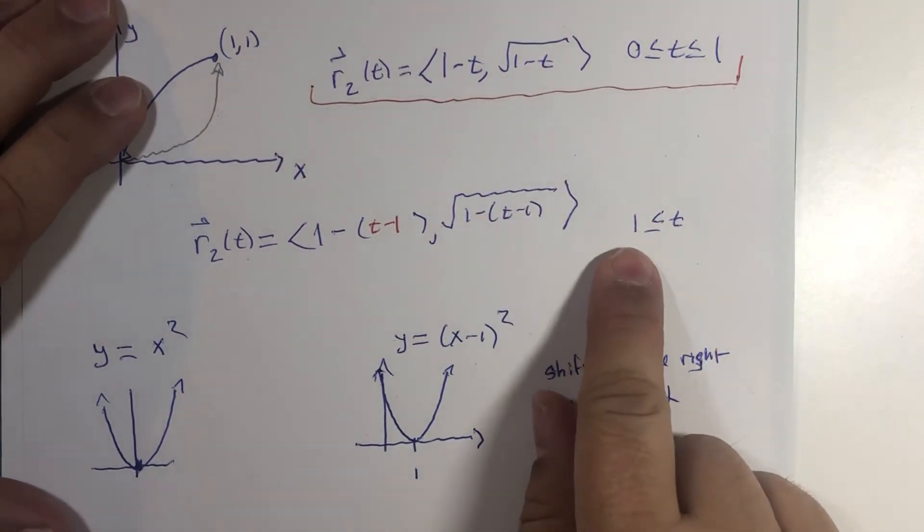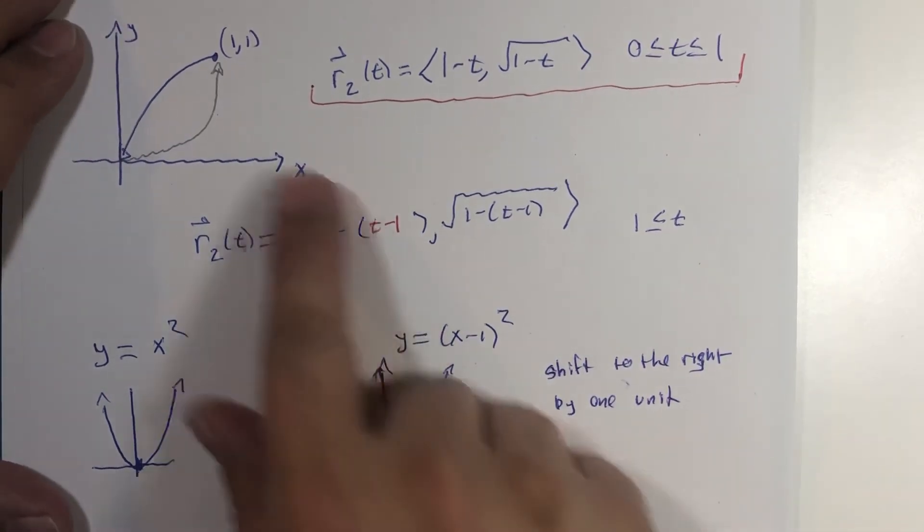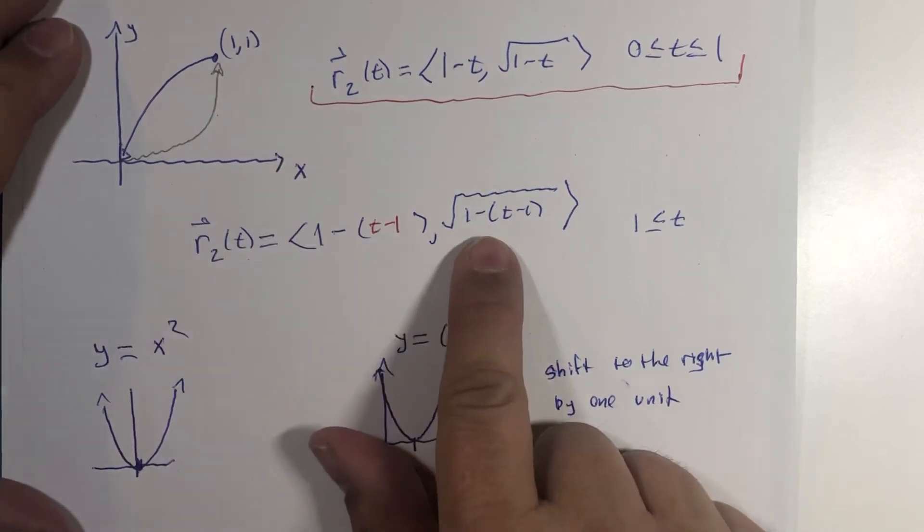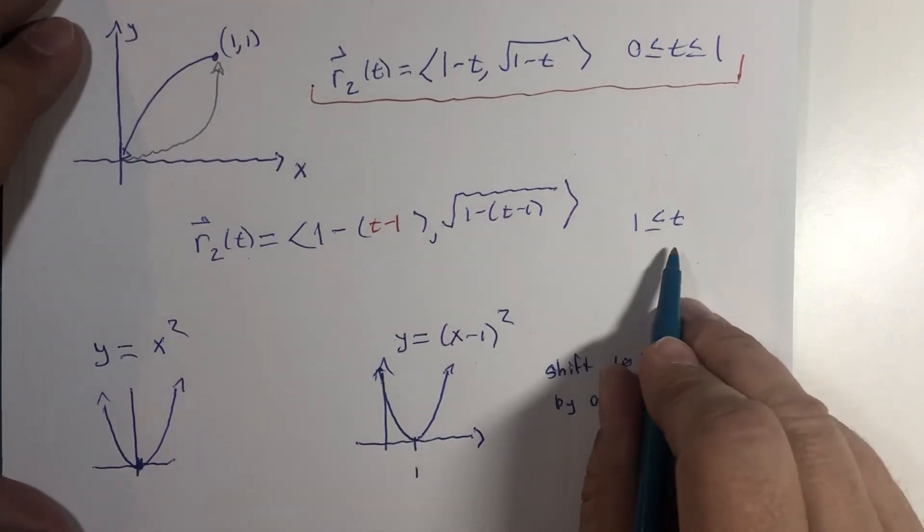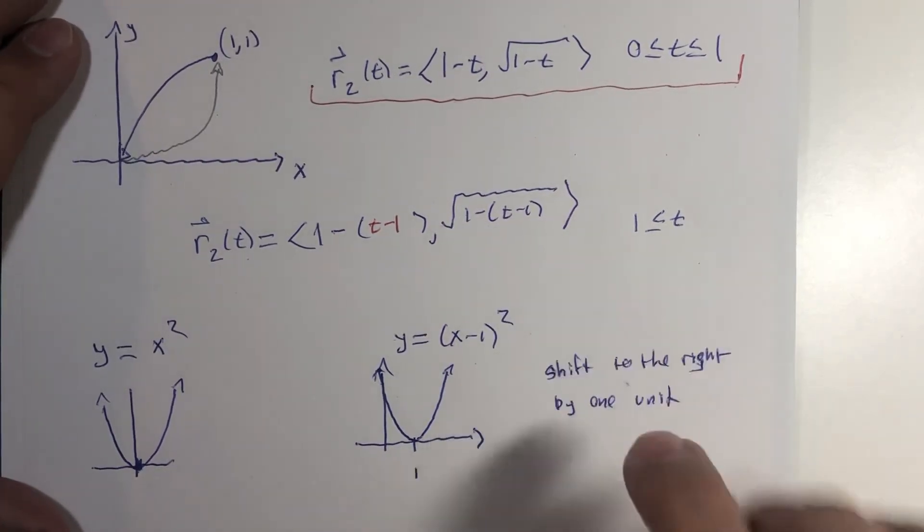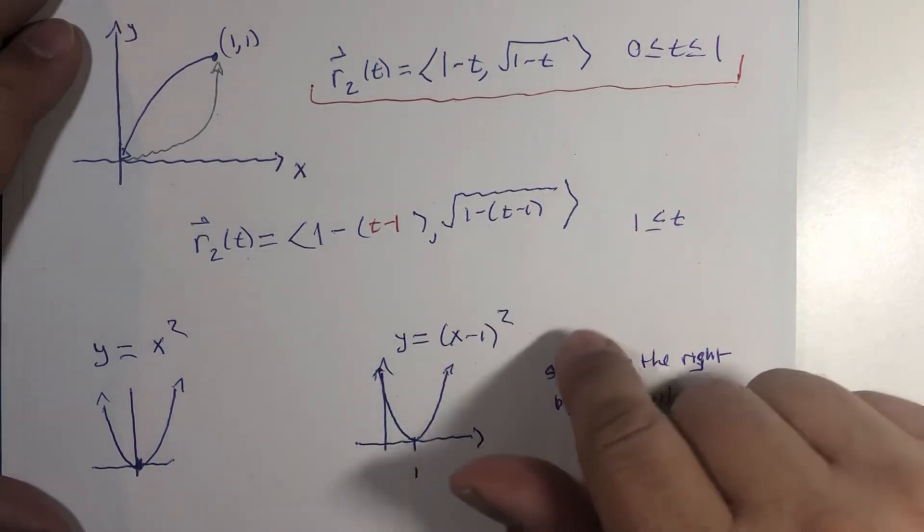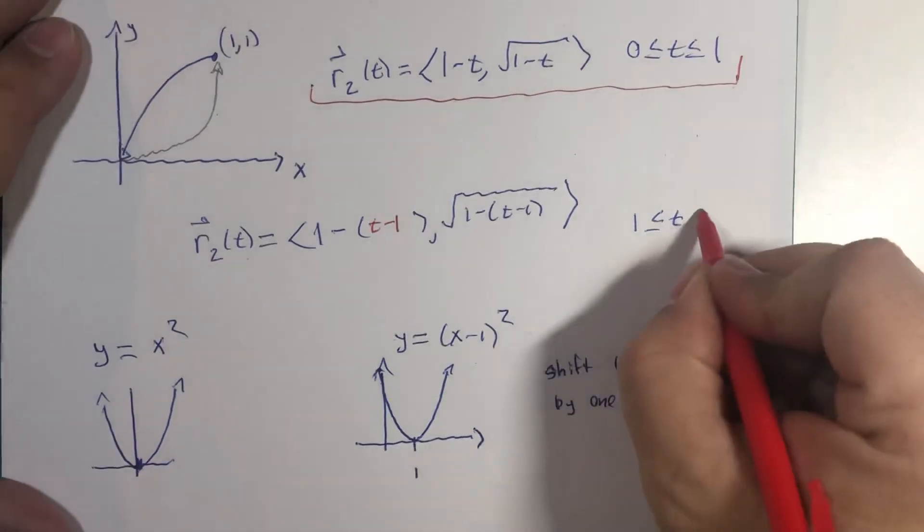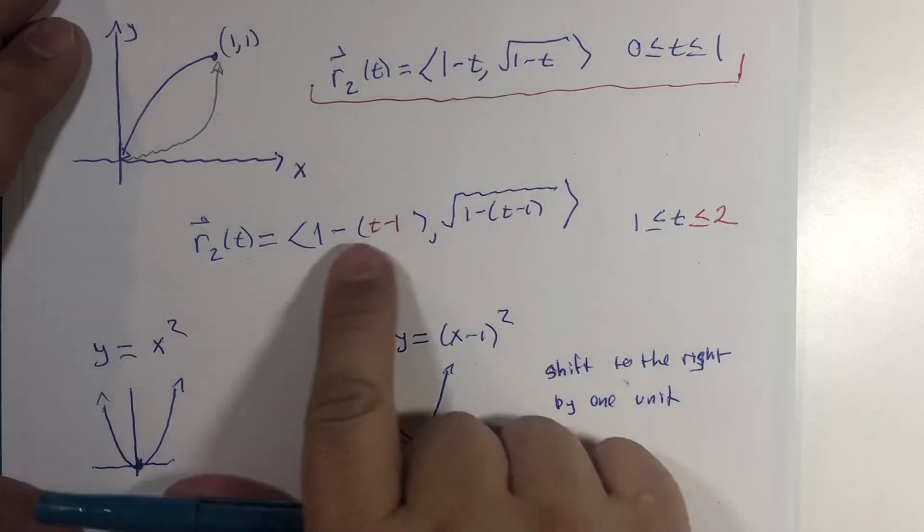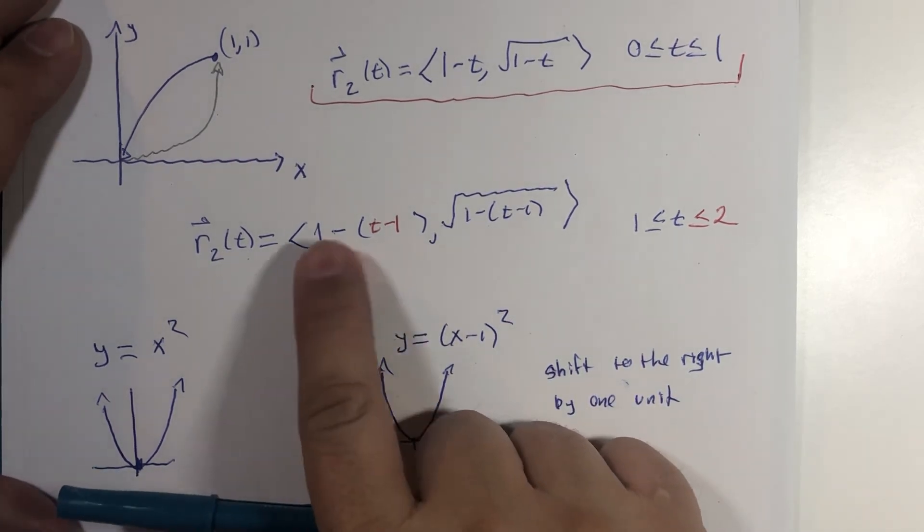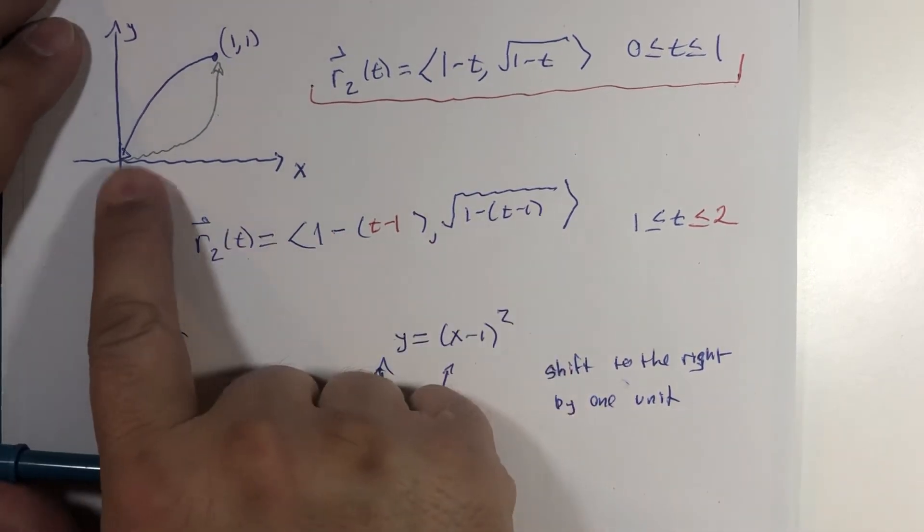If t is one, this is zero, one minus zero is one, I start at the point (1,1), that'd be square root of one. What's the time value where it all ends? Well if it took one second to get there and we shifted the graph by one unit in the sense of time, I claim it'll be two. Two minus one is one, one minus that one equals zero puts me here, square root of zero is zero puts me there.